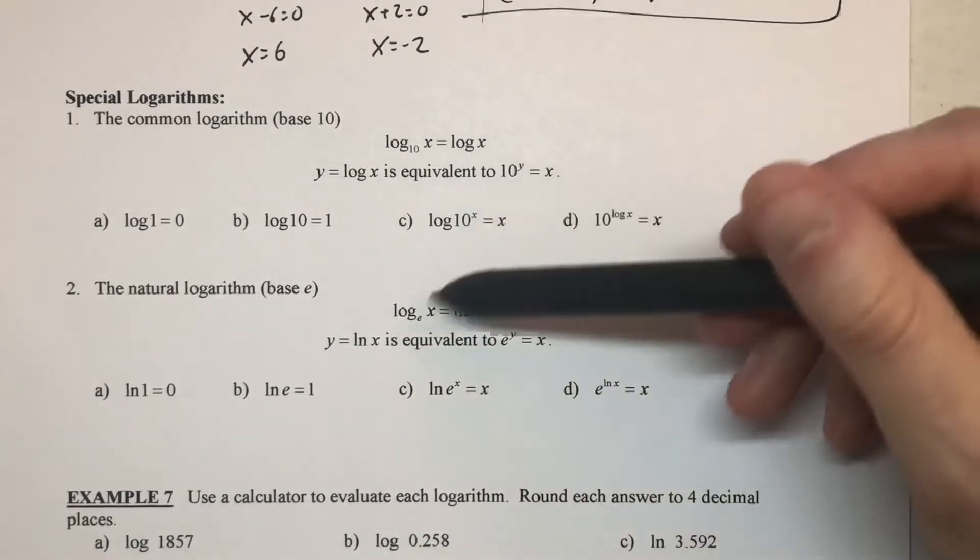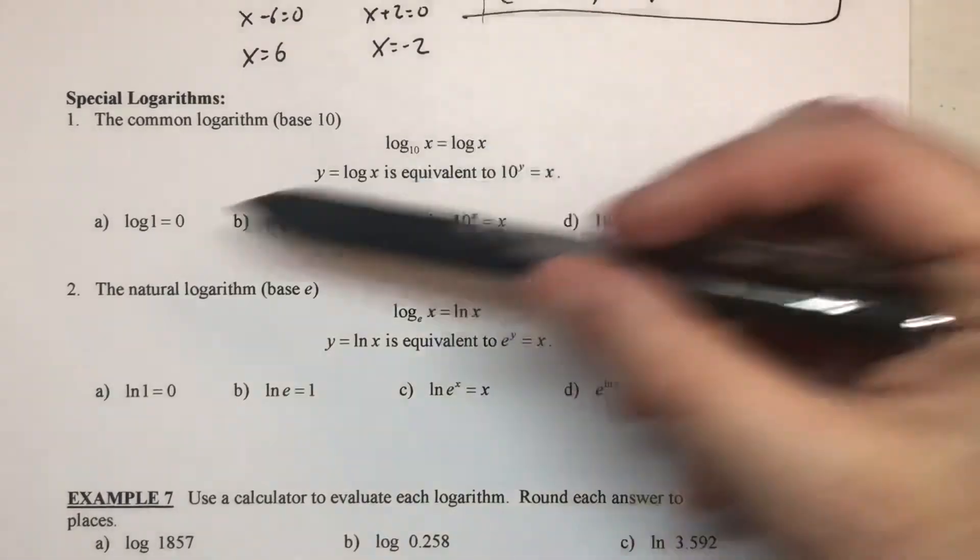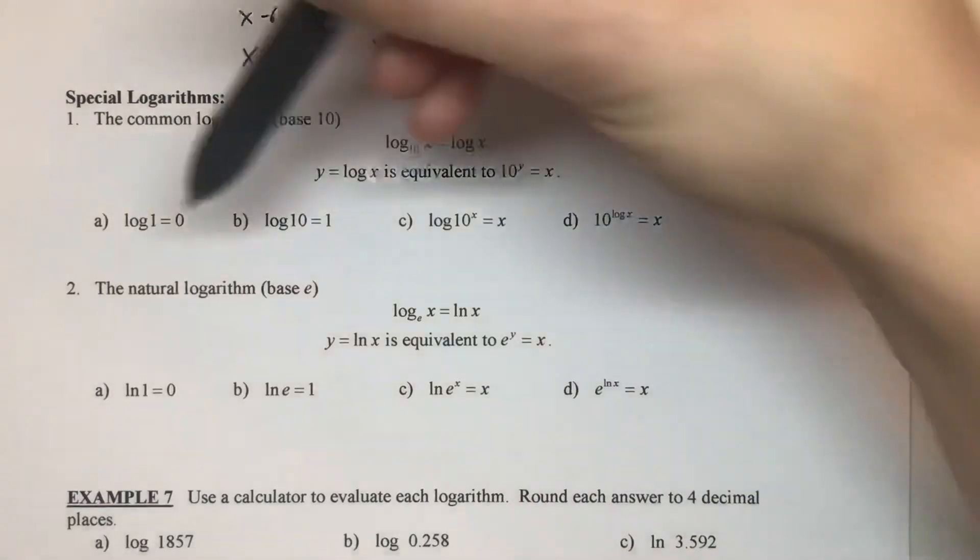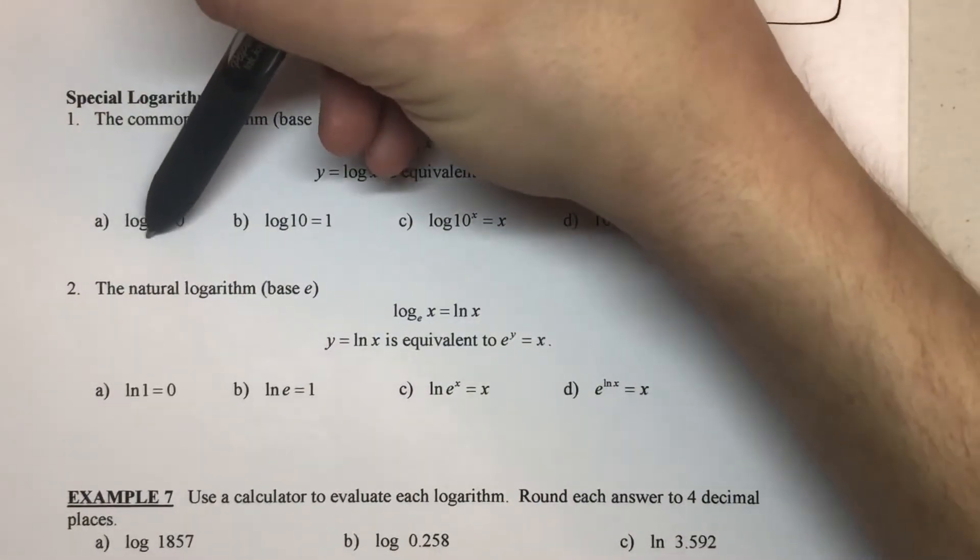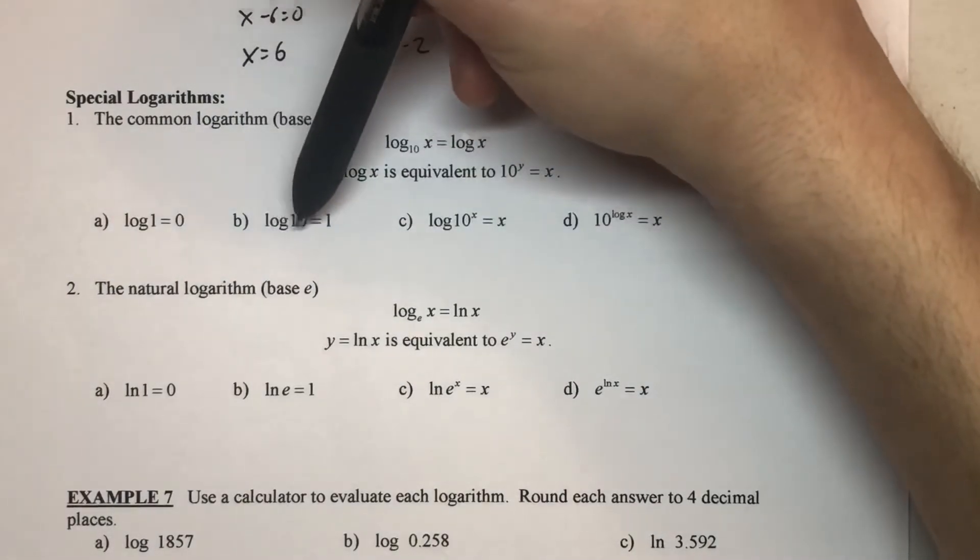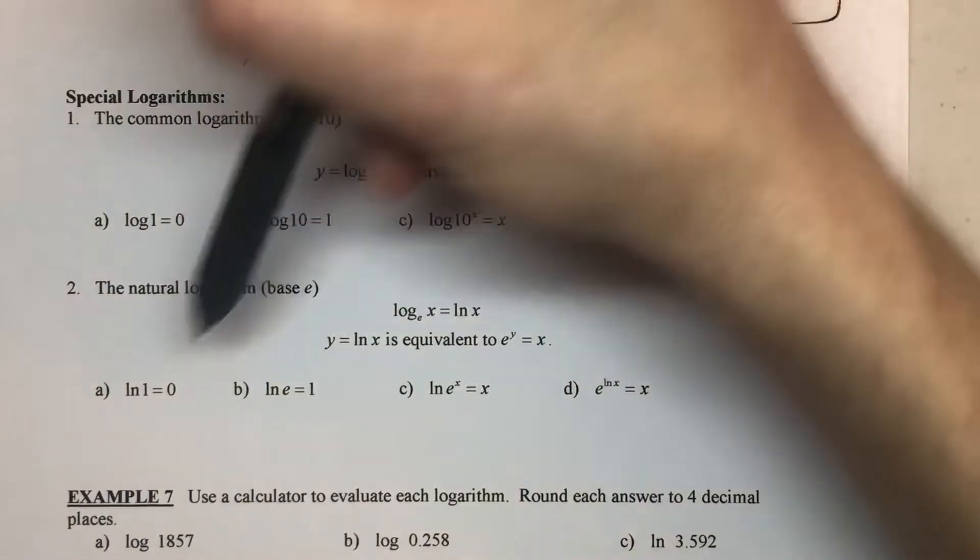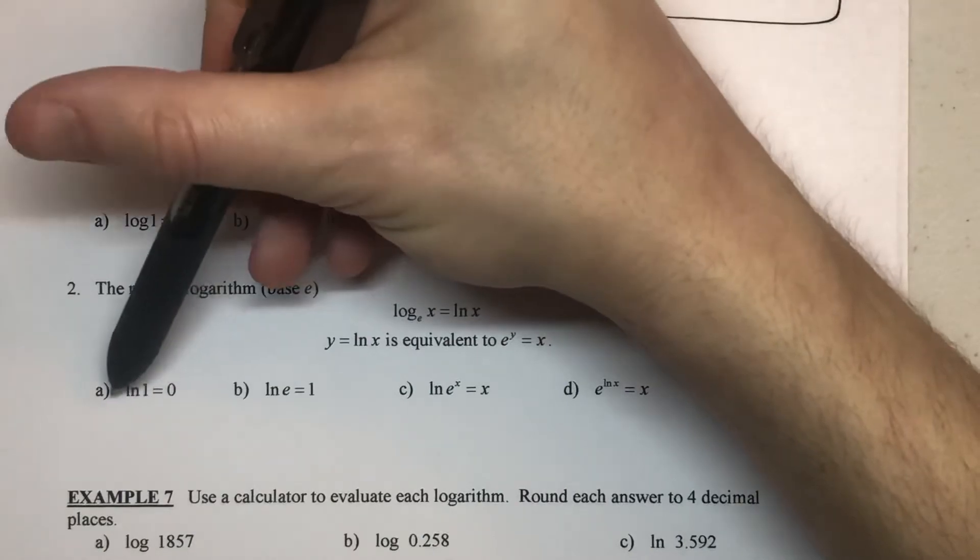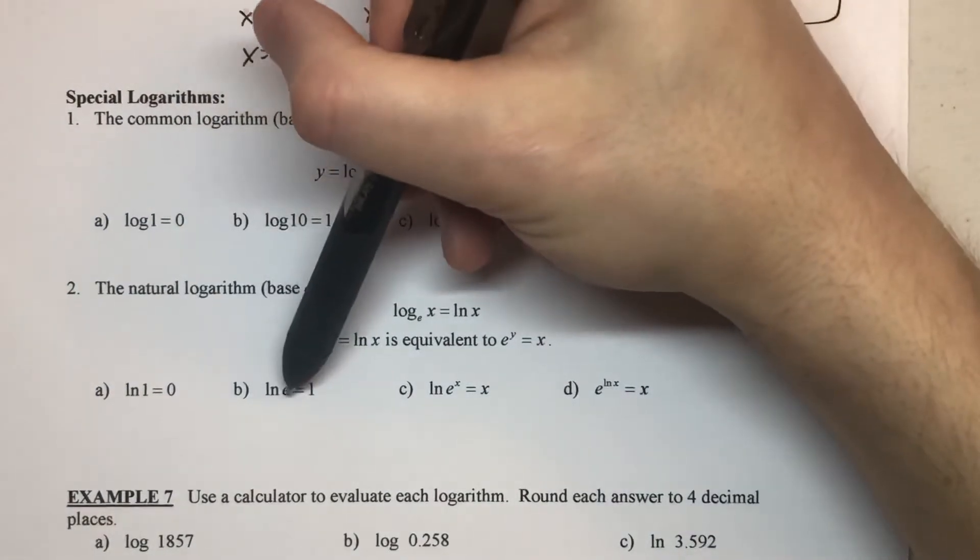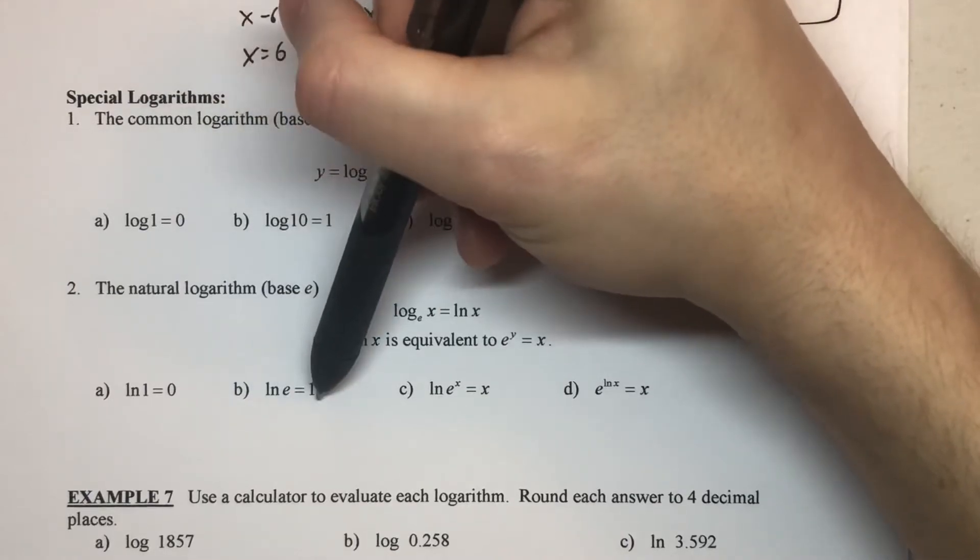And so with these two very specific and very common bases, here's just a list of those four properties that we looked at on the previous page. Again, log base 10 of one will be zero, and log base 10 of 10 will be one. Just like here, ln of one, which is like log base e of one, will be zero, and ln of e, log base e of e, will be one.